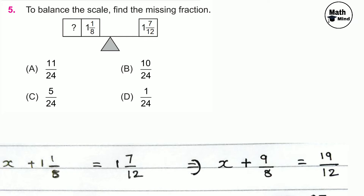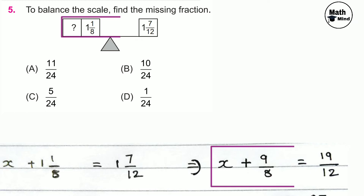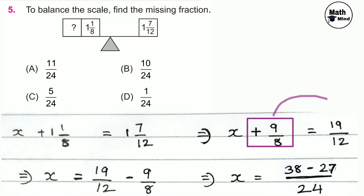Converting mixed fractions to improper fractions: 1 and 1/8 equals 9/8, and 1 and 7/12 equals 19/12. So the equation is x plus 9/8 equals 19/12. Taking 9/8 to the right-hand side — since 9/8 is added on the left, it will be subtracted from the right.